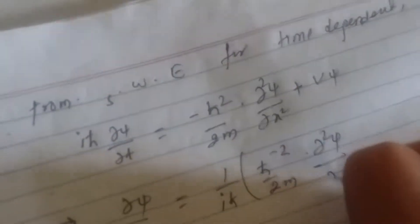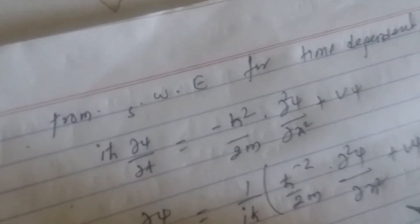We know from the time-dependent Schrödinger wave equation: i-ℏ del psi/del t equals minus ℏ-squared over 2m times del-squared psi over del x-squared, plus V times psi. From this we calculate del psi/del t equals 1/(iℏ) times [minus ℏ-squared over 2m times del-squared psi over del x-squared plus V psi]. This is equation star.